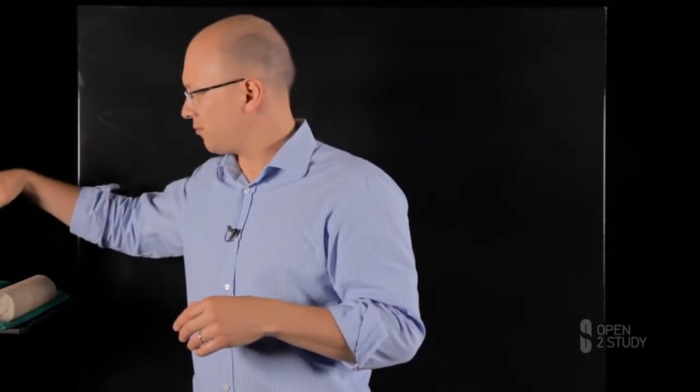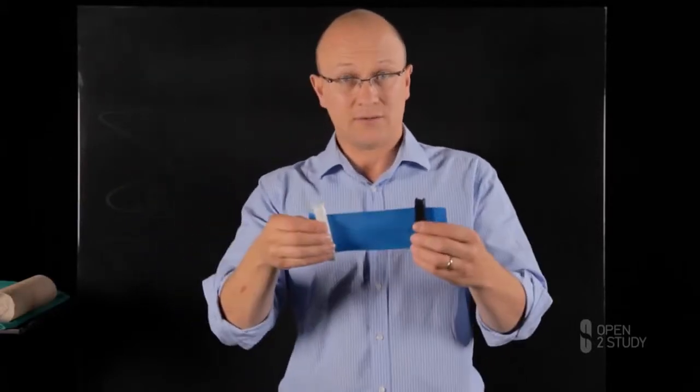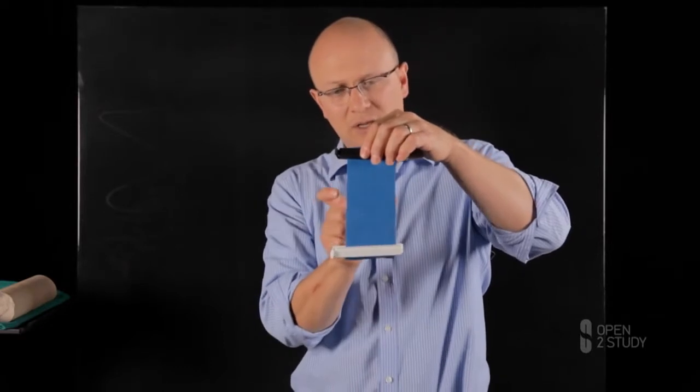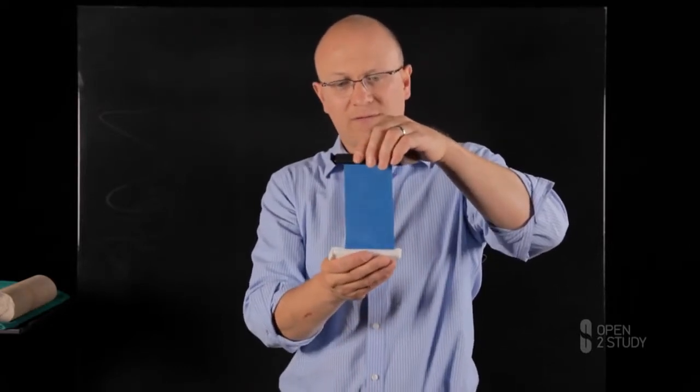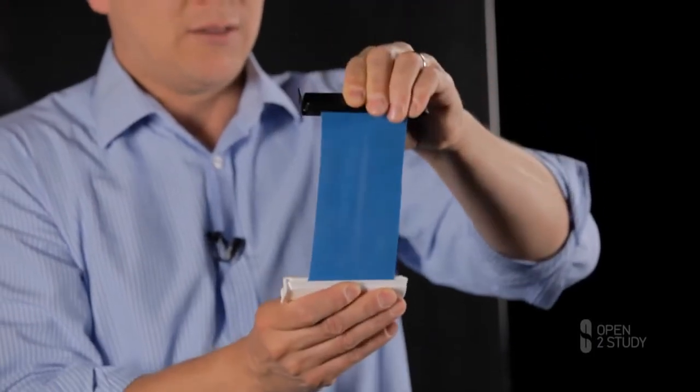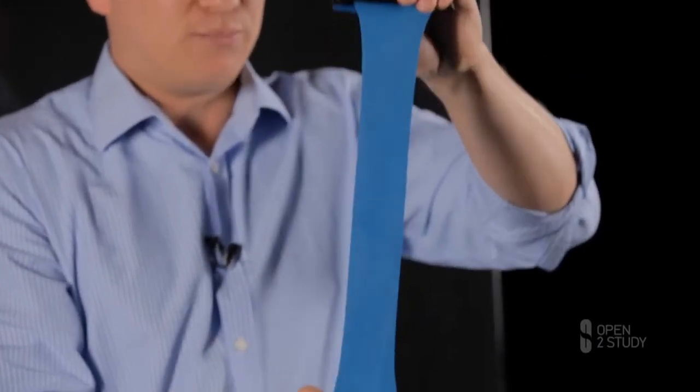So now let's have a look at what happens in the direction perpendicular to loading. So that is, for example, if we load a specimen vertically, what happens in the horizontal direction? And let's start with an experiment. Let's take this rubber band and we're going to stretch it. Look at how wide it is and look at what happens to the width as we stretch it. We can clearly see that the rubber band narrows as we pull on it.